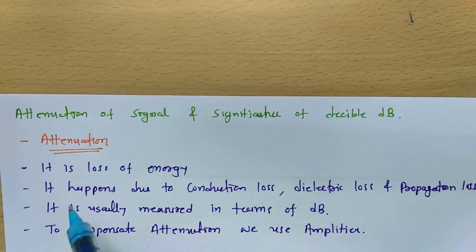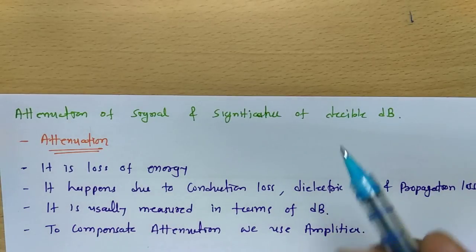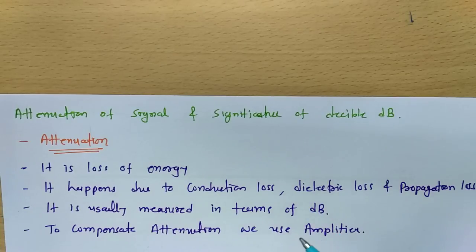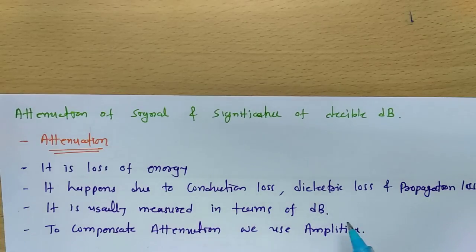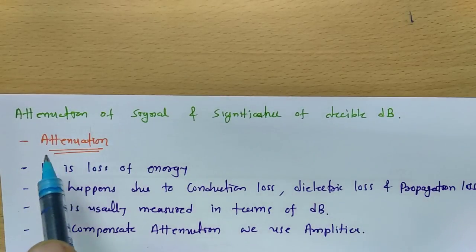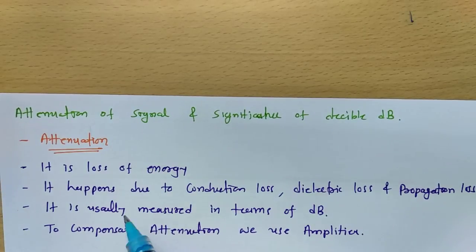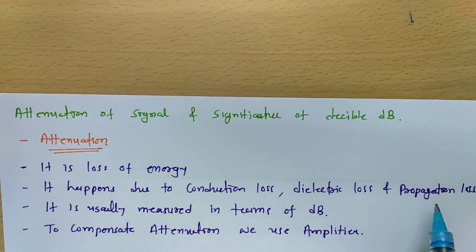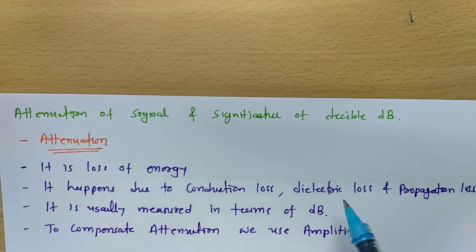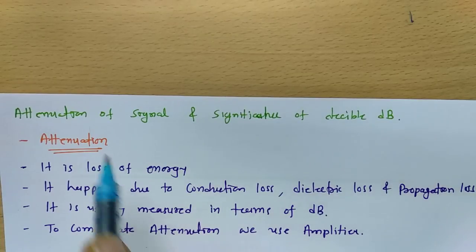There are several reasons for attenuation of signal. For microstrip or coaxial transmission lines, attenuation happens because of conduction loss and dielectric loss. There is also propagation loss, which is another cause of attenuation. For wireless transmission media, the major loss happens because of propagation loss. So conduction loss, dielectric loss, and propagation loss all result in attenuation of signal in a transmission medium.